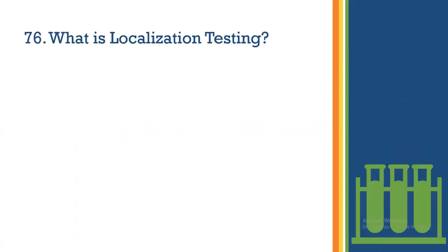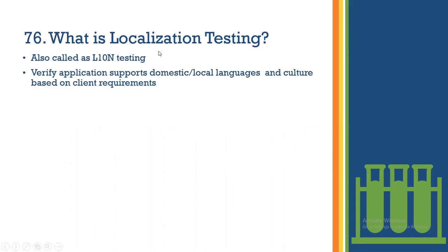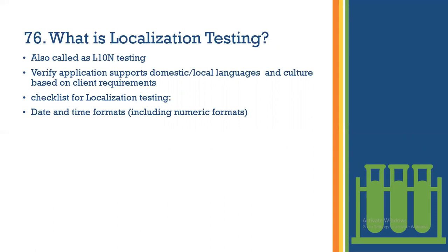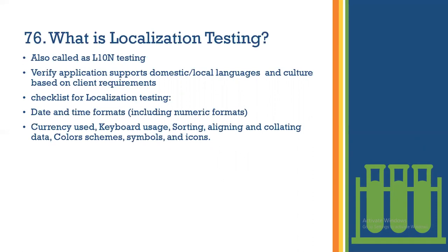What is localization testing, also called L10N testing? Here, 10 represents the number of characters between L and N. It verifies that the application supports domestic or local languages and culture based on client requirements. The checklist for localization testing includes: date and time formats, numeric formats, currency used, keyboard usage, sorting, aligning and collating data, color schema, symbols, and icons.